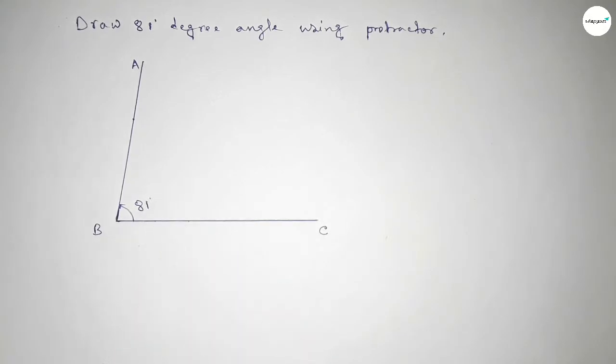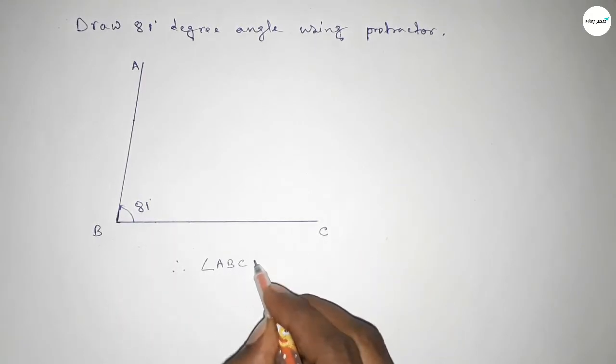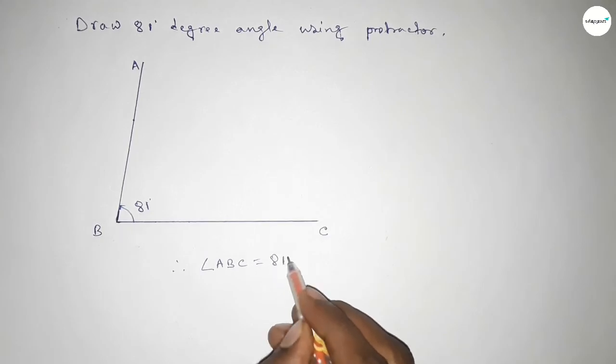Therefore, angle ABC equals 81 degrees. That's all, thanks for watching.